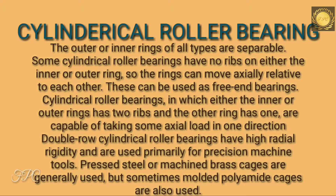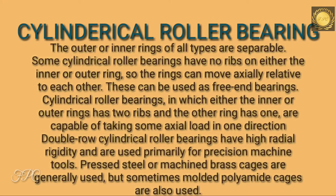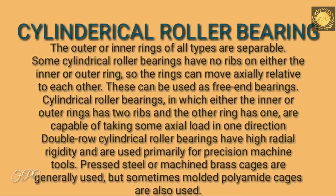Double row cylindrical roller bearings have high radial rigidity and are used primarily for precision machine tools. Pressed steel or machined brass cages are generally used, but sometimes molded polyamide cages are also used.